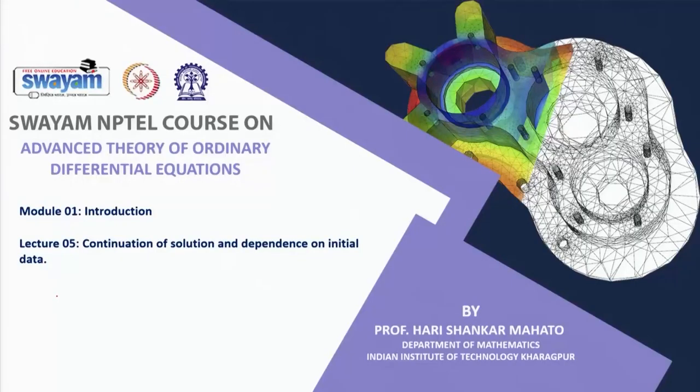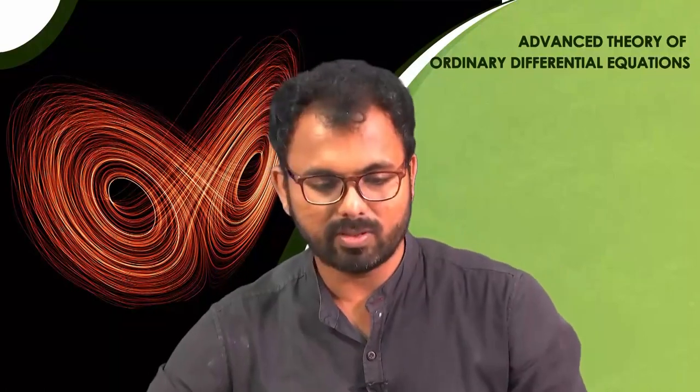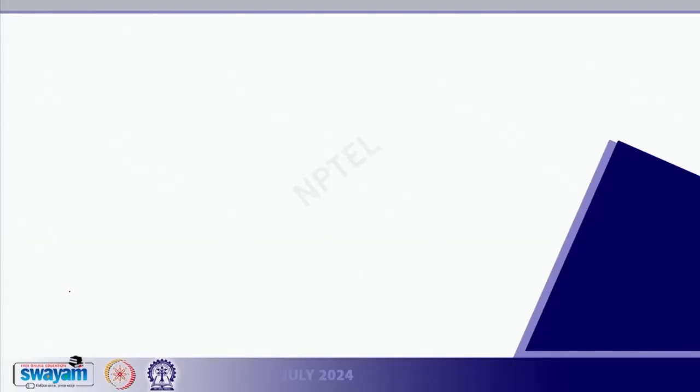Hello students. Up until the previous class we learnt about continuation of the solution up to the boundary. That means, initially when you talk about existence of solution, we only get local existence, then under some conditions you can obtain a global solution as well. We summarized several theorems in the previous class — just to give you a recapitulation of what we covered.